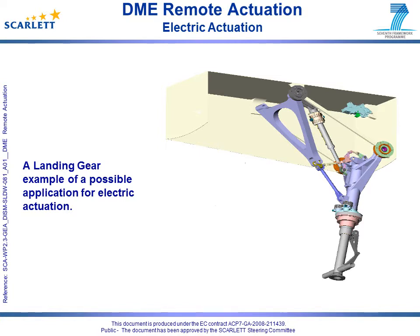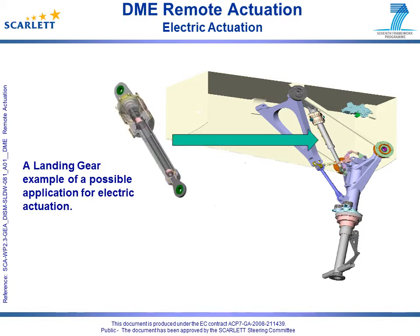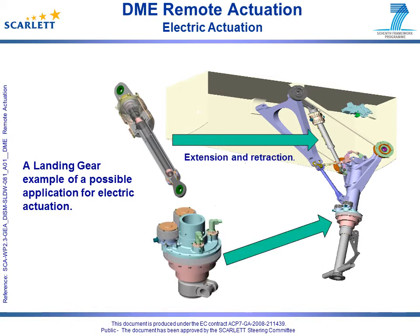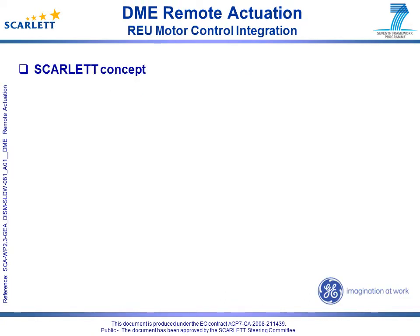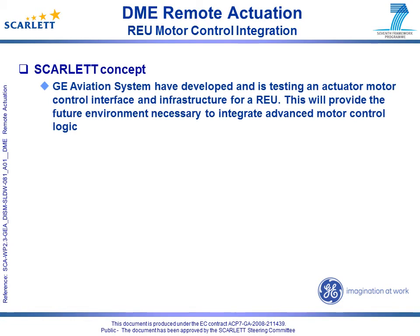Landing gear is one of a number of possible applications for electric actuation. Linear electric actuators may be used for extension and retraction. Rotary actuators may be used for nose wheel steering. As part of the SCARLET time-critical demonstrator, an electronic controller has been developed by GE Aviation Systems to support investigation of the real-time performance capability of DME architecture.